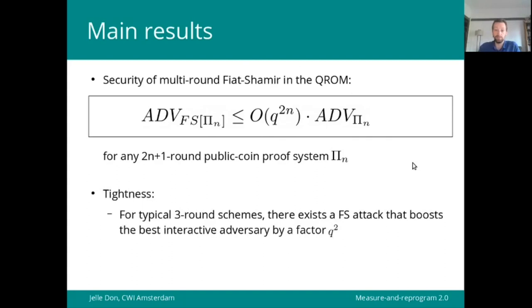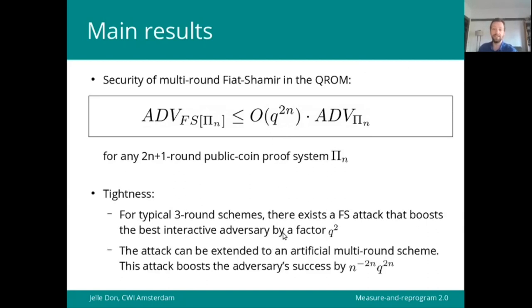And indeed, this is tight, because in our paper we provide an attack. We provide an attack for typical three-round schemes, so-called sigma protocols, which indeed boosts the success of the best interactive adversary by a factor q squared, showing that for n equals 1, this loss is optimal. Then we extend the attack to a somewhat artificial multi-round scheme, and we get almost the same boost, except for this factor n to the power minus 2n. But since we're usually considering n to be constant, that means that asymptotically q to the power 2n is optimal as well.